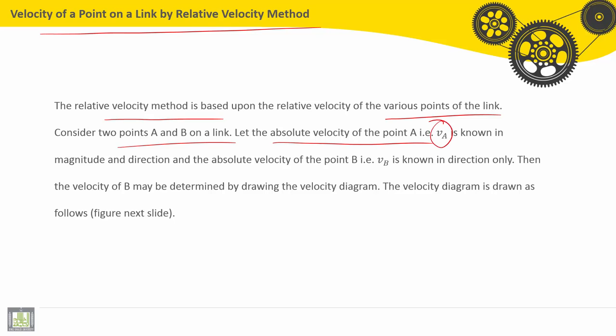called VA, is shown in magnitude and direction, and the absolute velocity for point B is VB, also known in direction only. Then the velocity of B may be determined by drawing the velocity diagram.